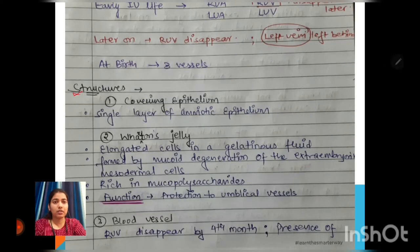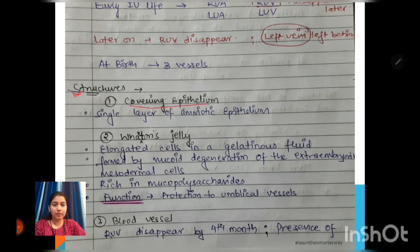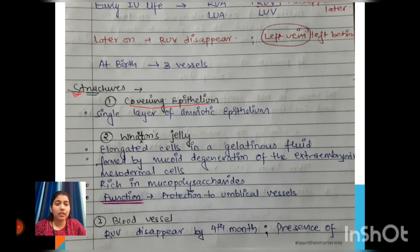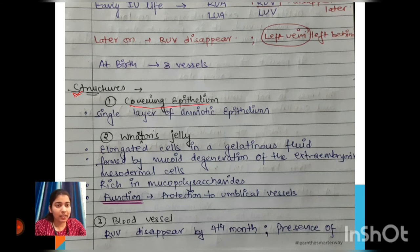The structures within the umbilical cord include: first, a covering epithelium which is a single layer of amniotic epithelium; and second, Wharton's jelly, which consists of elongated cells in a gelatinous fluid.